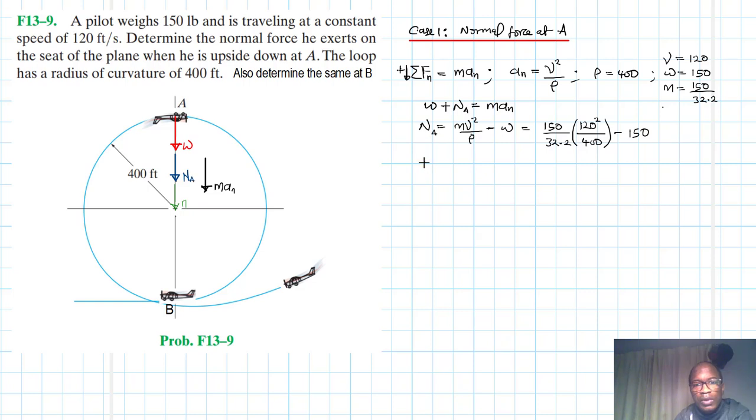Then minus the weight which is 150. Therefore our normal force N_A becomes equal to 150 divided by 32.2 times 120 squared divided by 400 minus 150. This becomes 17.70 pounds. Let's go to case two.